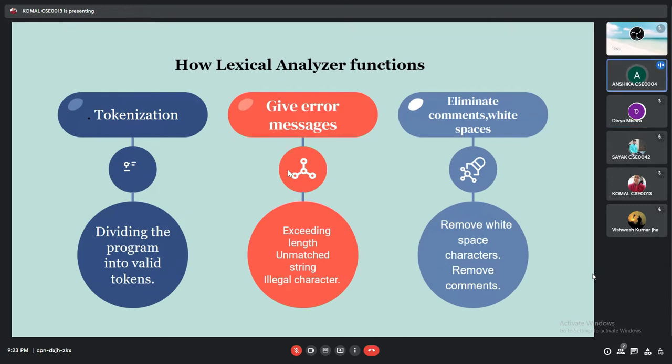So now let us understand how lexical analyzer functions. The three types of functions that lexical analyzers does is tokenization, gives error messages and eliminates comments and whitespaces. Tokenization divides the program into valid tokens. Tokenization is the act of breaking up a sequence of strings into pieces such as words, keywords, phrases, symbols and other elements called tokens. Tokens can be individual words, phrases or even whole sentences. In the process of tokenization some characters like punctuation marks are discarded. The next function gives error messages when the length of the string is exceeding, it has unmatched strings or illegal characters.